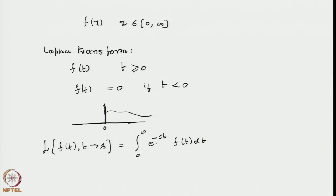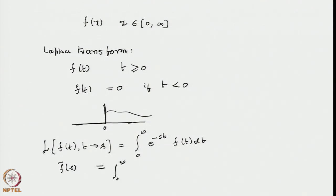You may note that in the previous generating function that we defined, we had used e to the power plus st as the notation. So it is conceptually just about reversing the sign of the reciprocal variable. In some conventions, the Laplace transform of a function f is often denoted f tilde of s, which is the integral of e to the power minus st times f(t) dt.